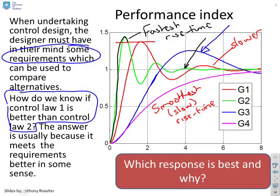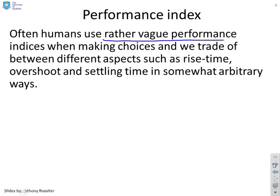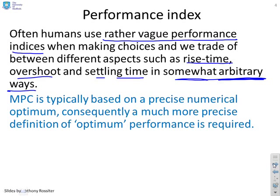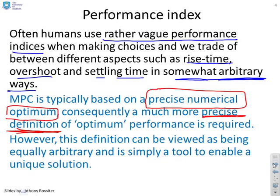So humans often use rather vague performance indices when making choices, and we trade off between different aspects such as rise time, overshoot and settling time, and here's the key thing, in somewhat arbitrary ways. Predictive control is different because it's based on a precise numerical optimum. So there's no ambiguity.